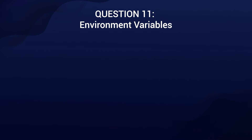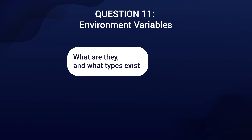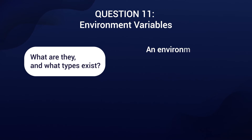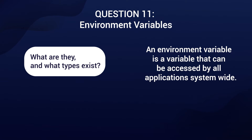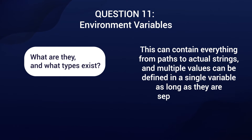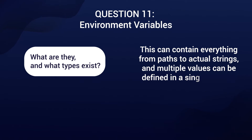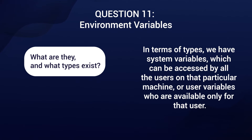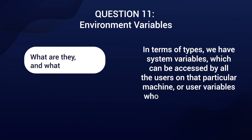Let's talk about environment variables: what are they and what types exist? An environment variable is a variable that can be accessed by all applications system-wide. It can contain everything from paths to actual strings, and multiple values can be defined in a single variable as long as they are separated with a comma. In terms of types, we have system variables, which can be accessed by all users on that machine, or user variables, which are available only for that specific user.